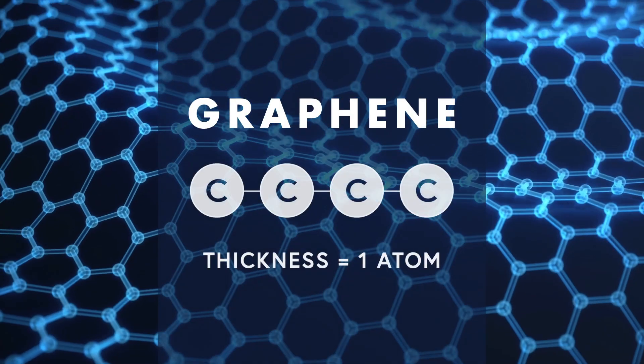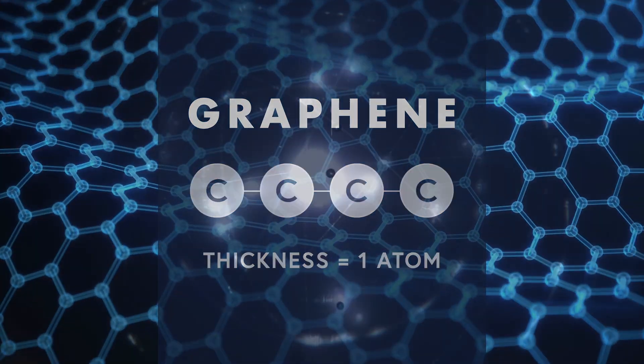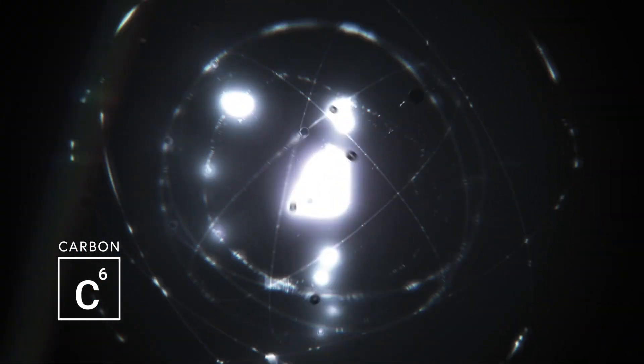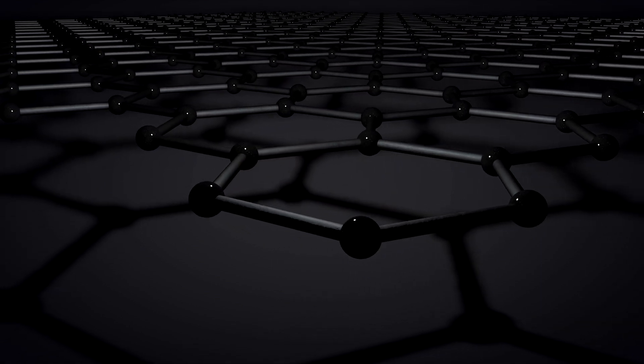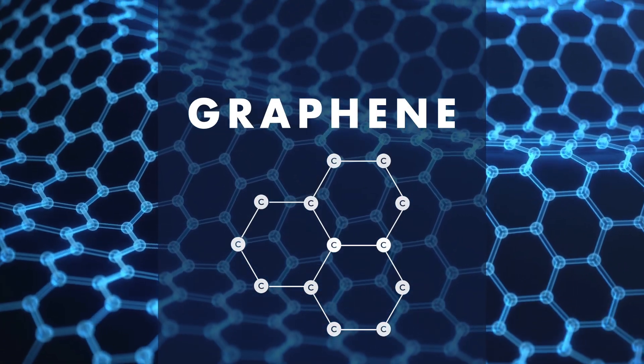At only one atom thick, graphene is the thinnest material ever discovered and is comprised exclusively of carbon atoms. Each atom is covalently bonded to three other atoms, creating a lattice structure that is both strong and flexible. This structure allows graphene to exhibit some truly extraordinary characteristics.